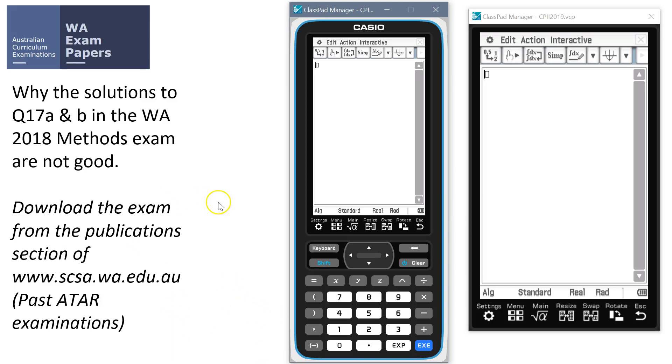Here's a quick video to explain why the solutions to question 17a and b in the WA 2018 methods exam were basically just not good. You can get a copy of the exam from the publication section of SCSA, that's here, and click on the past ATAR exam links.